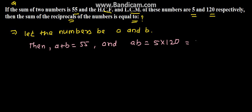Why does A times B equal 5 times 120? Because there is a rule that the product of numbers equals LCM times HCF. We have been given HCF as 5 and LCM as 120, so this comes to 600.